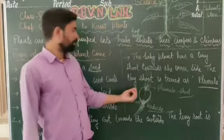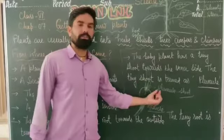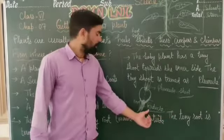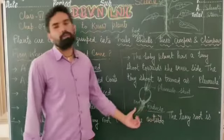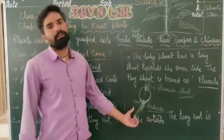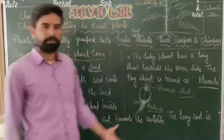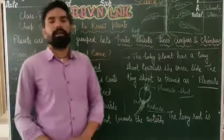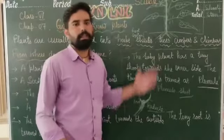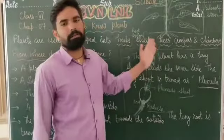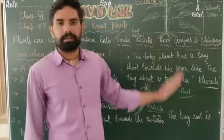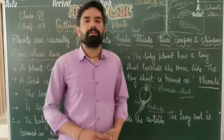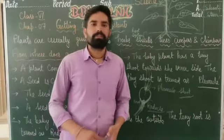तो इस chapter में हमने पढ़ा: plumule shoot बनाता है और radicle root बनाता है in a seed। Next class में हम climbers, creepers, herbs, and shrubs की categories पढ़ेंगे। All the best!